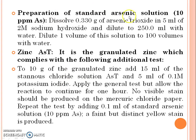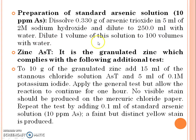Preparation of standard arsenic solution: dissolve 0.330 g of arsenic trioxide in 5 ml of 2 molar sodium hydroxide and dilute to 250 ml with water. Dilute 1 volume of this solution to 100 volumes with water.